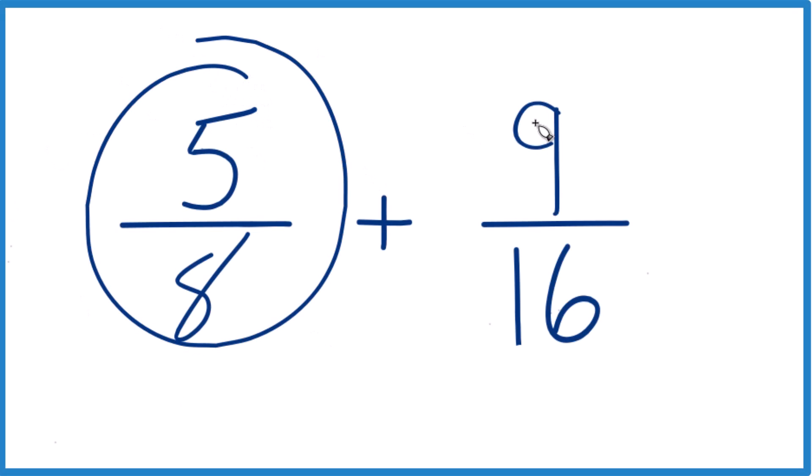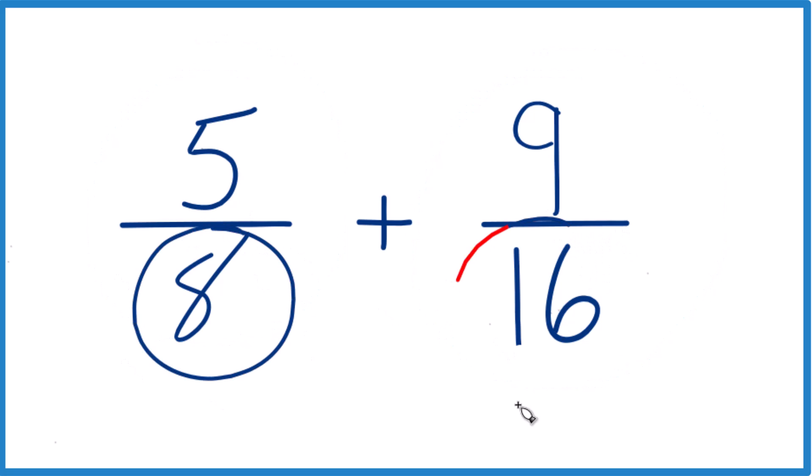So let's add 5 eighths and 9 sixteenths. Here's how you do it. What we need is to have our denominator to be the same, have a common denominator. Because if the denominators are the same, we add the numerators and then we just bring the denominator across.